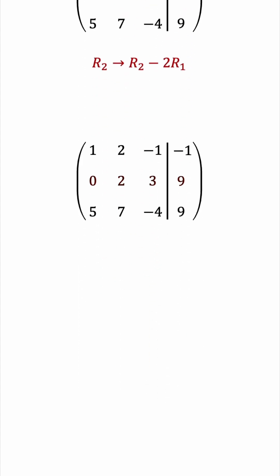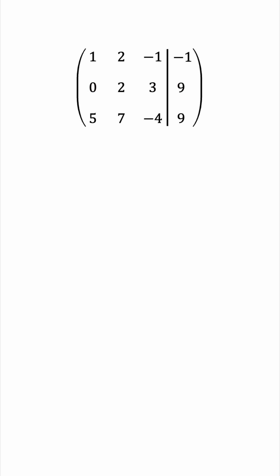And now we'll subtract 5 copies of row 1 from row 3. This completes the first column.